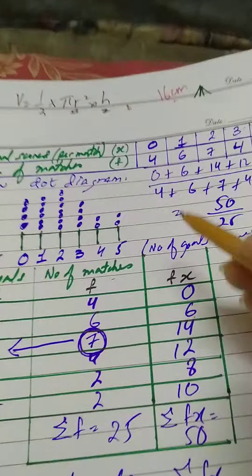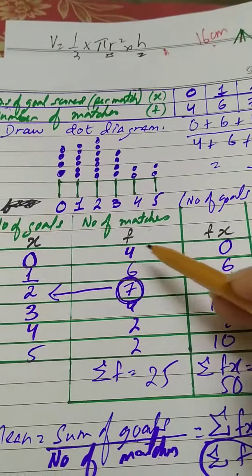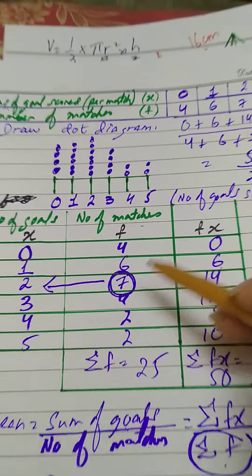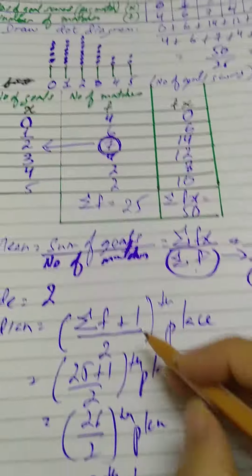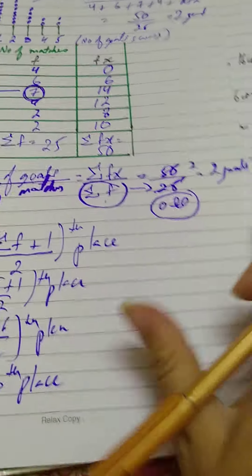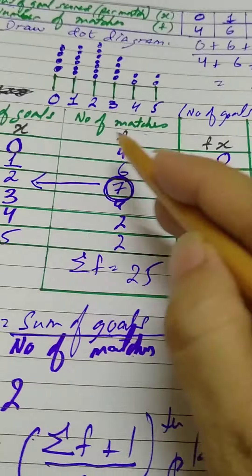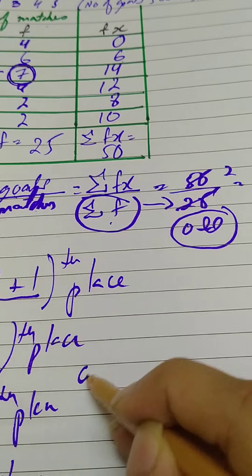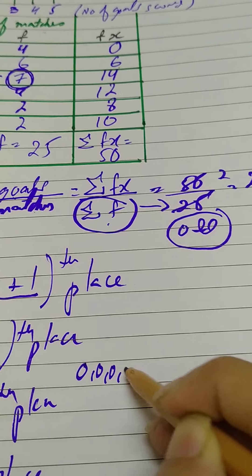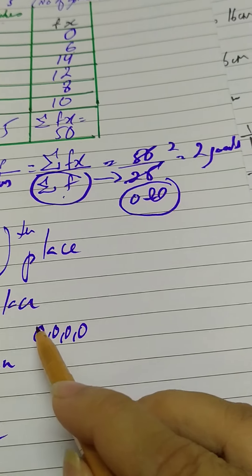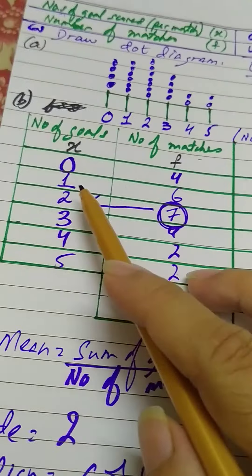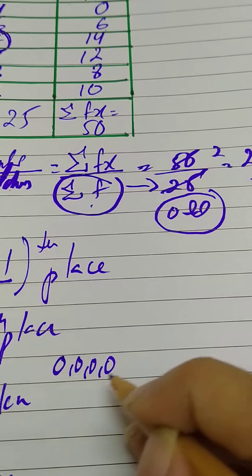Now count to the 13th place. Zero goals occurred in four matches — that accounts for match positions 1 through 4. One goal occurred in six matches — that accounts for match positions 5 through 10. So after zero goals and one goal we've covered 10 matches.